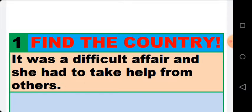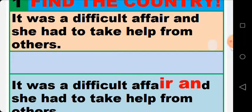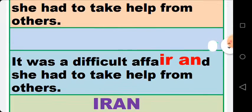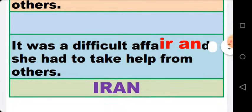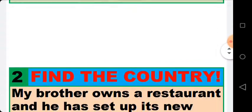Okay, let us see the name of the country. The answer is Iran. It was a difficult affair — 'I' and 'R' are the last two letters of the word 'affair', and the first two letters of the word 'and' give us 'Iran'. So the name of the country is Iran.